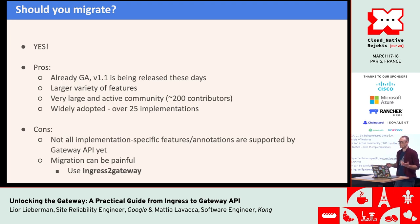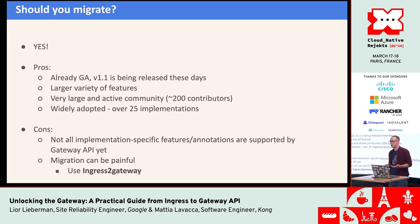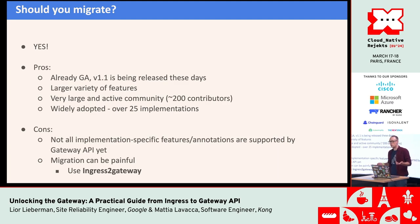Of course there are also some cons. Not all implementation-specific features or annotations are supported by Gateway API yet — you may want a specific feature from your implementation that isn't properly handled. So maybe the time isn't right for you yet, though you're always welcome to come to the community and advocate for what you need. Also, the migration can be painful and error-prone because you have to go through many ingress configurations and properly convert them into the right set of Gateway API resources. That's basically why we are here — there is a tool called Ingress2Gateway, your buddy to help throughout the migration process.